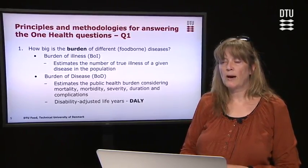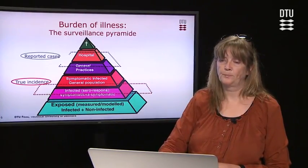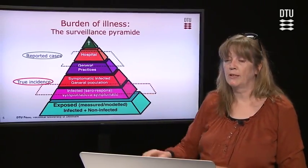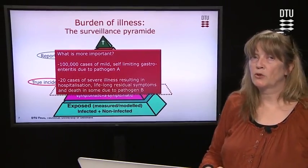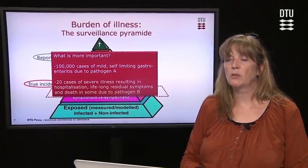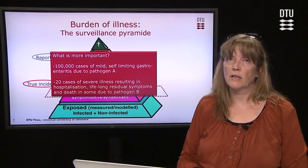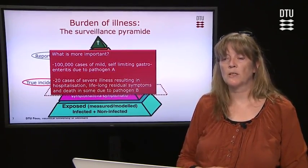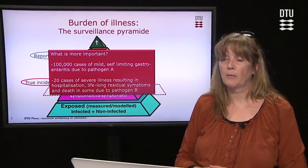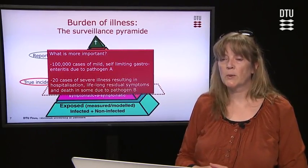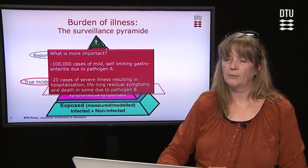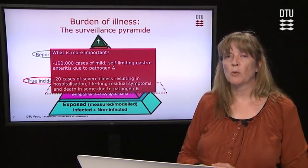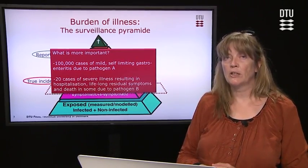Through this e-learning part you will learn how to calculate DALYs. You may remember the surveillance pyramid, where we have the reported number of cases at the top and the true incidence at the base. But even if we can estimate the true incidence, we are still faced with the question: what is more important — 100 cases of a mild self-limiting gastroenteritis such as norovirus, or 20 cases of a very severe illness resulting in hospitalization, lifelong complications, or even death? These are questions risk managers and politicians face when resources are limited and prioritization is needed. This is where DALYs come in — to compare across diseases and provide a measure for prioritization.